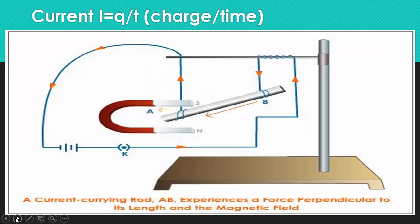Coming to the next slide, we can see here is a conductor of length AB, a conducting material which is placed in a magnetic field. How come it's a magnetic field? Because we have placed a horseshoe magnet there.